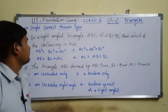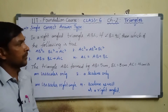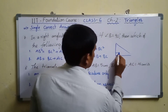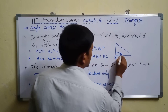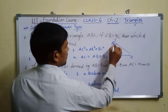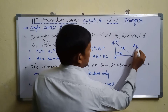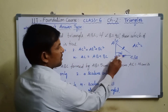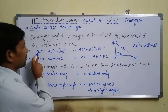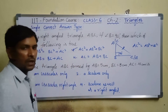Question number seven: in a right angle triangle ABC, if angle B is 90 degrees, then which of the following is true? With the right angle at B, AC is the hypotenuse. So AC squared equals AB squared plus BC squared — the hypotenuse square equals the sum of the other two sides squared. Option two is the correct answer.